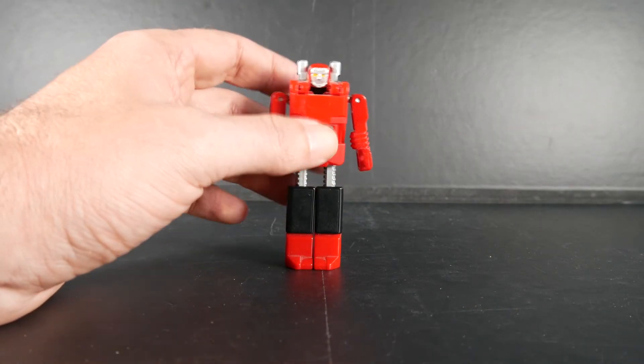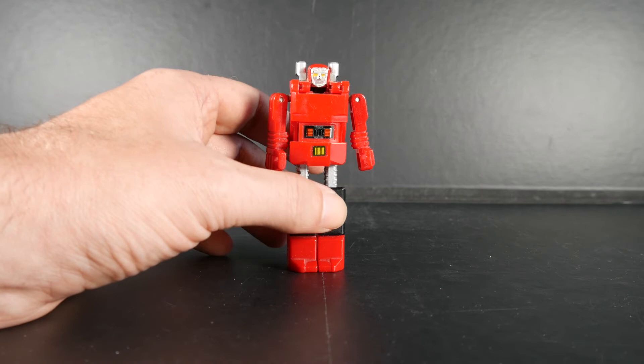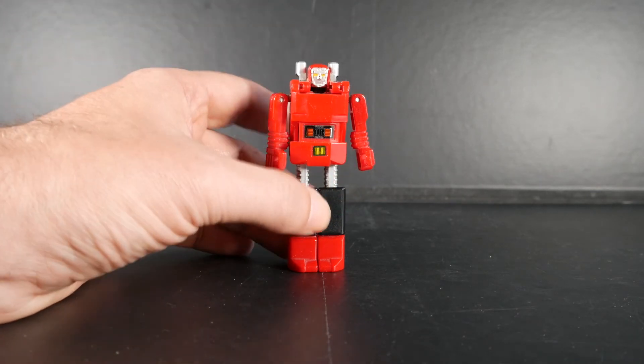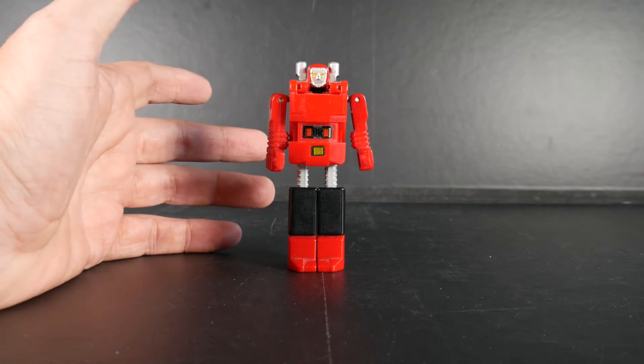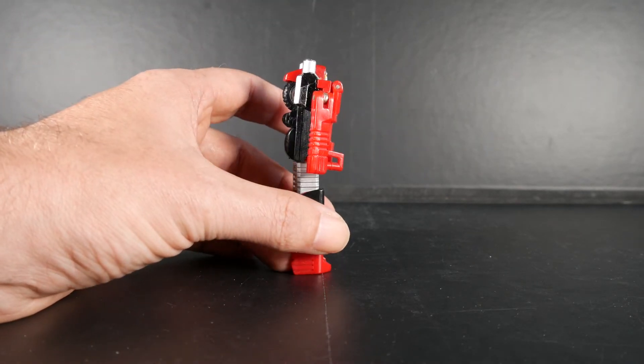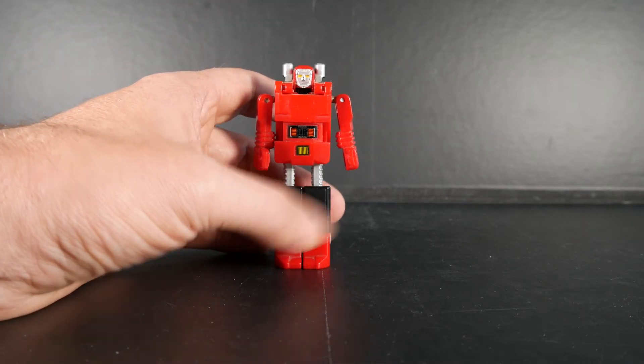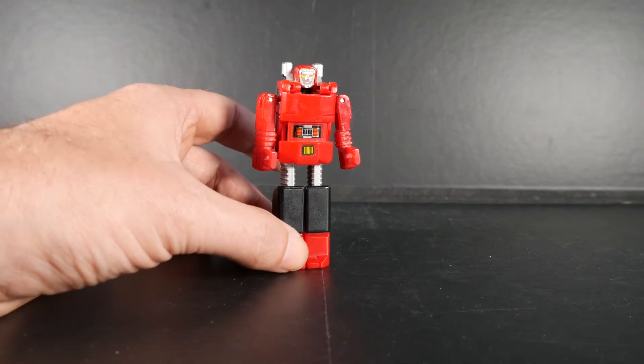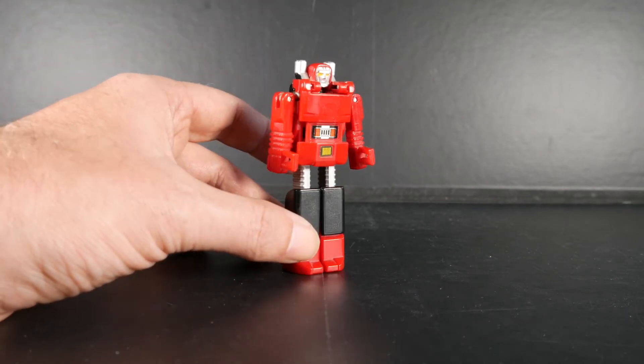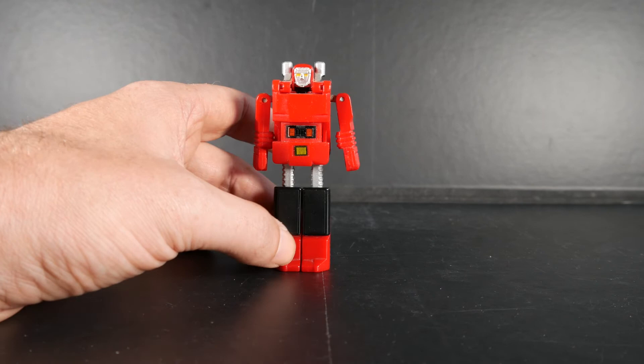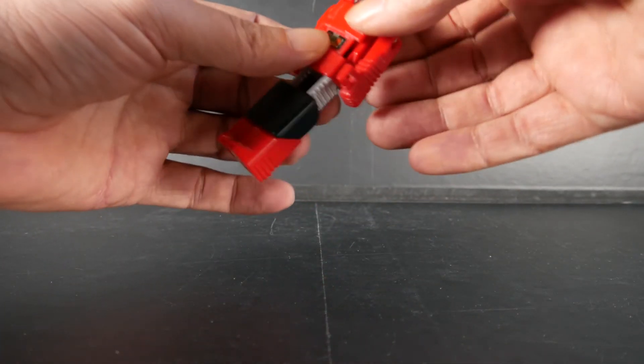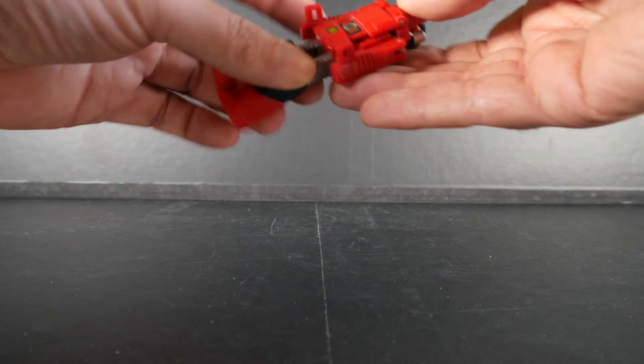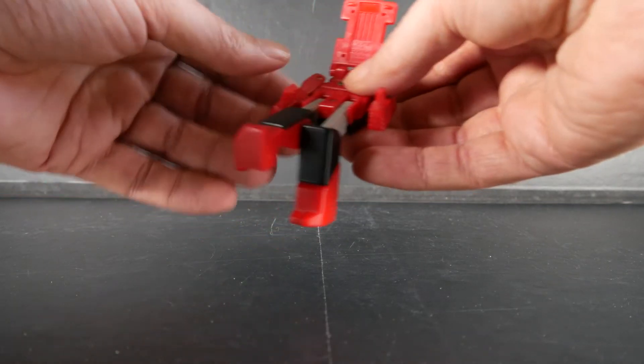Voilà donc le petit Robo Machine ou machine robot, ou gobo, qui porte le numéro 16 dans la gamme Bandai Tonka. Donc Scooter. Et comme pour Gipper évidemment, la transform inverse est extrêmement simple. Voilà, elle se fait très rapidement.